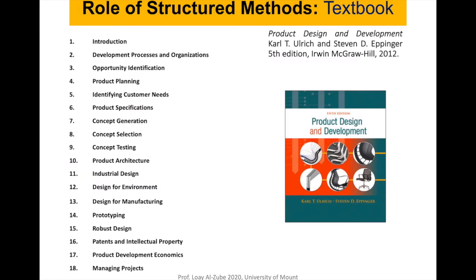And that's what our textbook is actually providing. In this textbook that we're using for this class, we are going to follow the steps laid out in the book — starting with opportunity identification, product planning, defining customer needs and product specification, and concept generation. I feel that the textbook is really helpful and useful, and I recommend anyone who's interested in engineering and design to have a copy. It's written in a way that you can follow it easily.